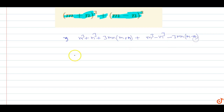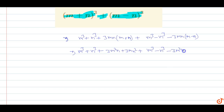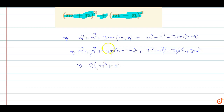Expanding fully: m³ + n³ + 3m²n + 3mn² + m³ - n³ - 3m²n + 3mn². The n³ terms cancel, and the 3m²n terms cancel. We are left with 2m³ and 6mn².